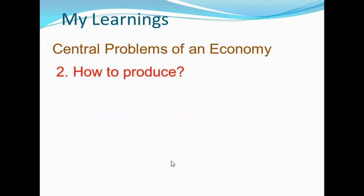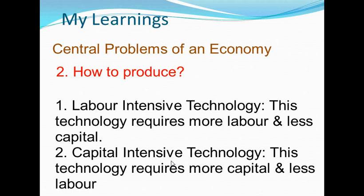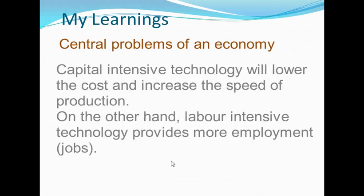How to produce. This problem involves deciding the type of technology which should be used for production. There are basically two types of technology. Labor intensive technology, which requires more labor and less capital. Capital intensive technology, which requires more capital and less labor. Capital intensive technology will lower the cost and increase the speed of production. On the other hand, labor intensive technology provides more employment or jobs. This gives rise to the problem of choice among these two technologies.